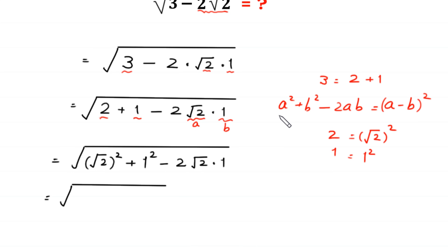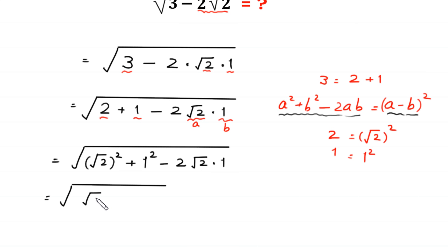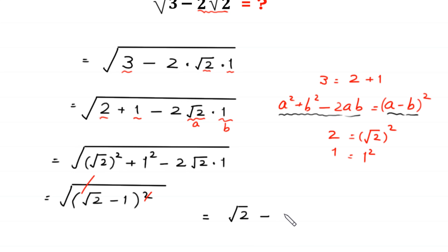Using the identity a² − 2ab + b² = (a − b)², the expression (√2)² − 2·√2·1 + 1² equals (√2 − 1)². The outer square root then cancels the square, giving √2 − 1. This is the final answer.